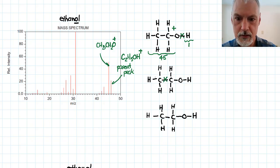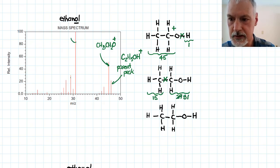There are other places it could break. If the substance broke here, we would have 15 on this side and 31 on this side. That gives these two peaks. So this one would be due to the CH2OH fragment, and this little peak down here at 15 due to CH3.